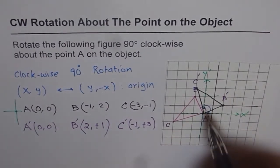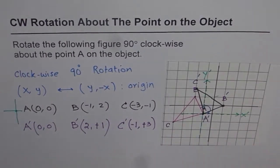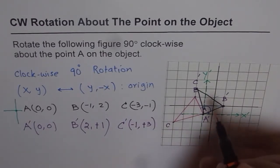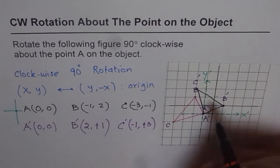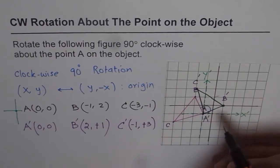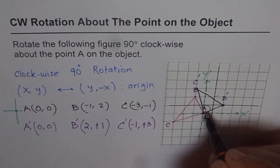That is the transformed triangle after rotation of 90 degrees. You can compare and see for yourself that segment AB in the original has moved 90 degrees.